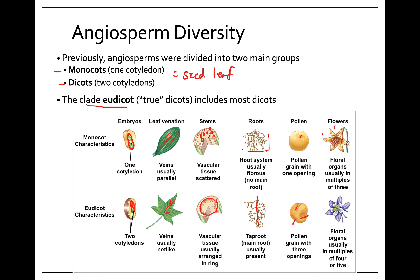The number of floral organs differs too: monocots have multiples of three — for example, six petals is a multiple of three. Eudicots usually have multiples of four or five. I think the easiest thing to remember is the leaf venation: if you look at a leaf of any plant, you can immediately tell if it's a monocot — veins are parallel — or a dicot — veins are branching.